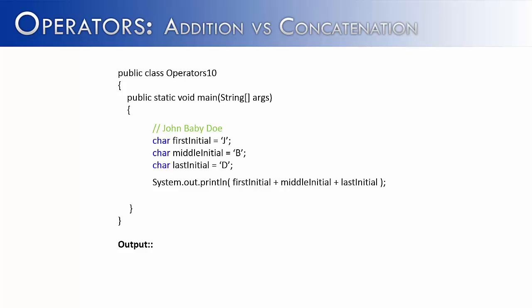Let's look at the difference between addition and concatenation. A good way to do this is to do a case study with the character data type. Let's say I gave you the name John Baby Doe, and I wanted you to print out his first, middle, and last initials.